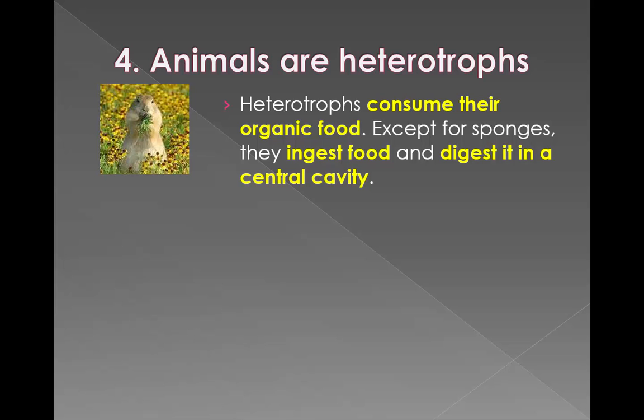The fourth characteristic of animals is they are heterotrophs. Heterotrophs have to consume their food. The only ones that don't have a central cavity for ingesting and digesting their food are sponges.